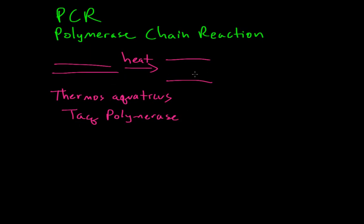And this polymerase is able to withstand the high heat needed to denature the DNA strands. So if you apply TAC polymerase to the now denatured single-stranded DNA, it's able to make a complementary copy of the DNA. So basically this is the overview of PCR. Now let's look at the specifics.